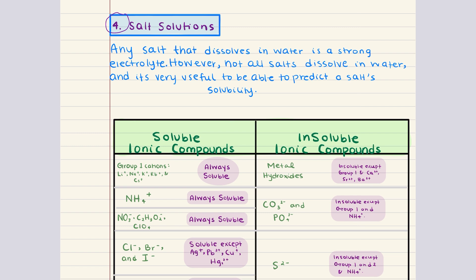A salt is any ionic compound that forms when an acid reacts with a base. When salts dissolve in water, they dissociate into their respective ions and this makes them strong electrolytes. However, not all salts dissolve in water to the same extent. This variability makes it important to be able to predict a salt's solubility in water. We can classify salts as either soluble or insoluble based on their ionic composition.